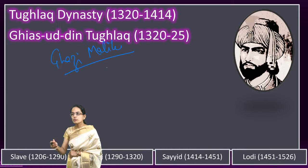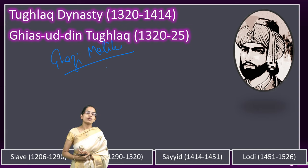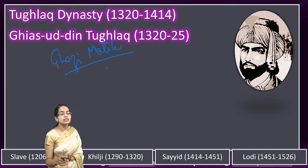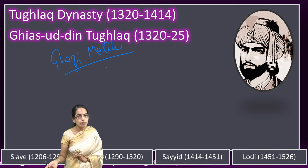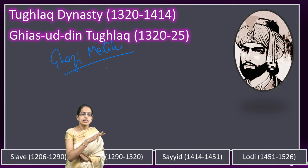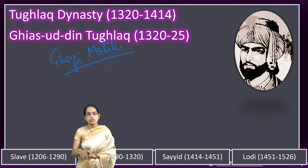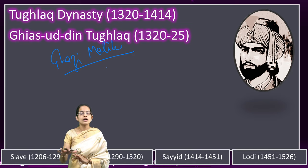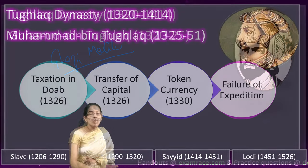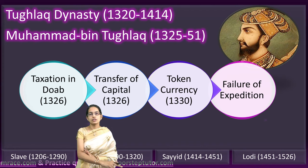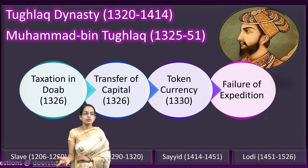Ghazi Malik was one of the most benevolent and strong rulers of that time, known for his firmness in decisions. However, it is believed that his own son, Jauna Khan — later known as Muhammad bin Tughlaq — planned a conspiracy against Ghazi Malik. In this conspiracy, a pavilion fell on Ghazi Malik, and as a result he lost his life. After him, as planned by his son, Muhammad bin Tughlaq rose to power.